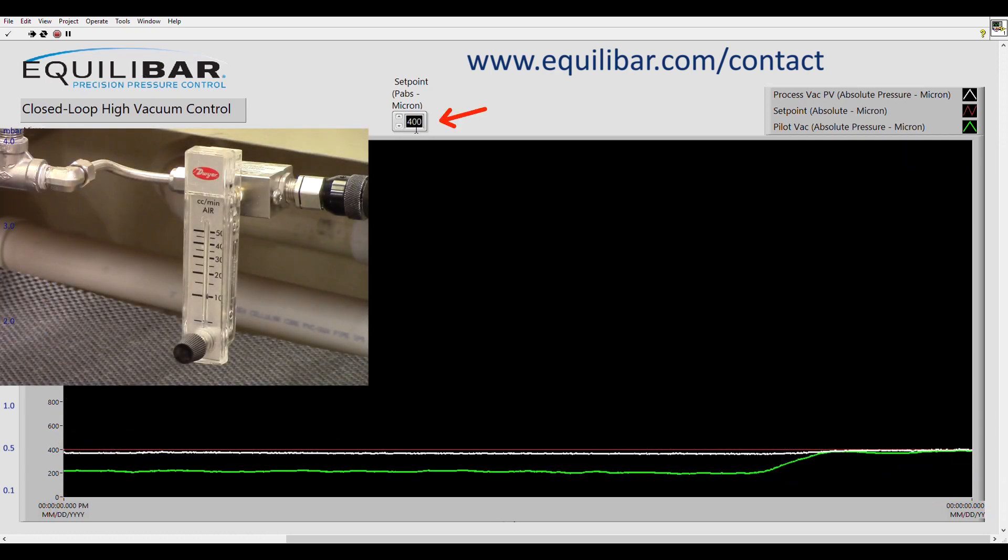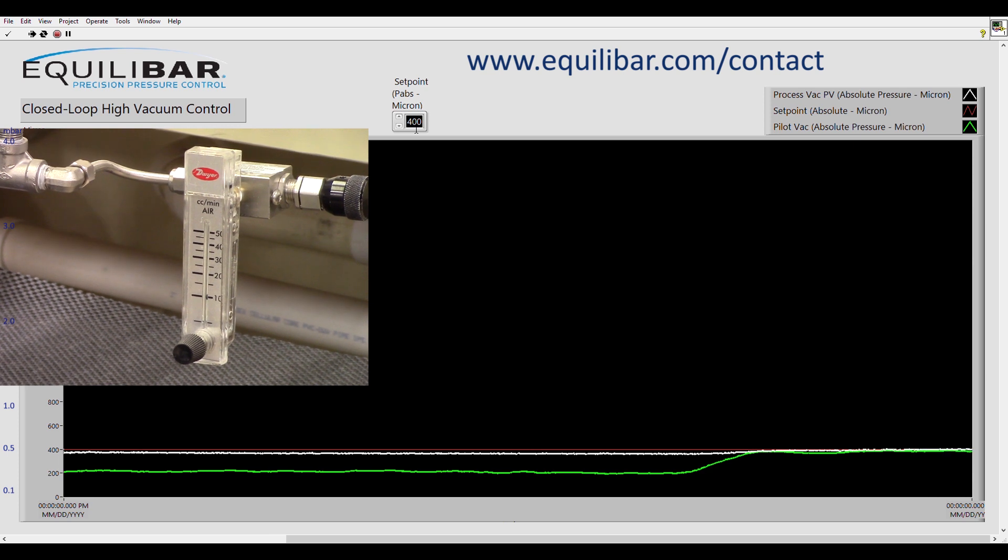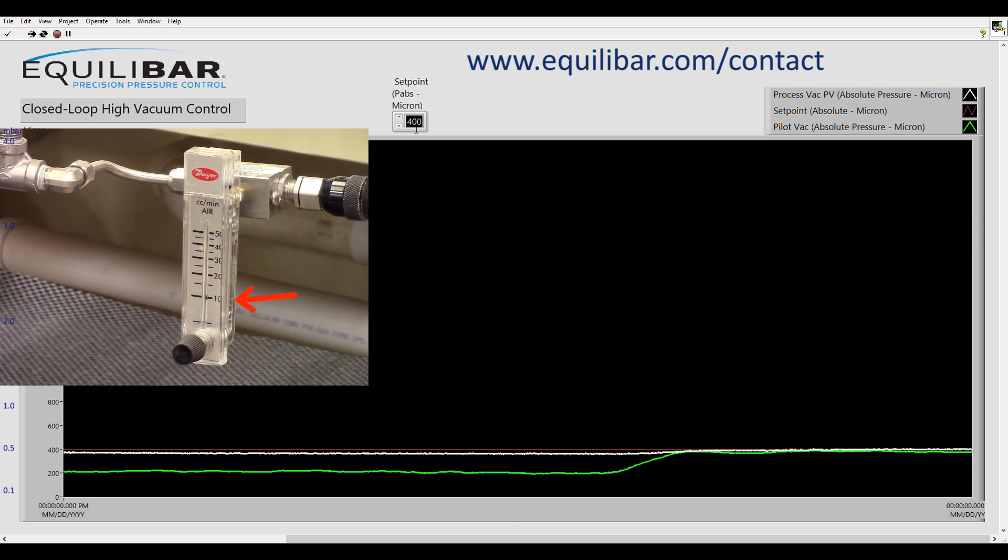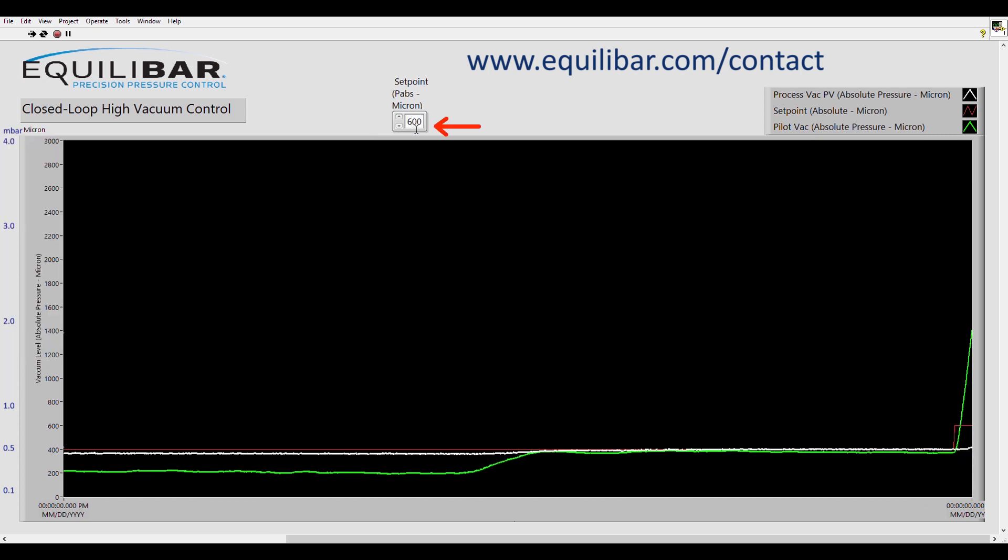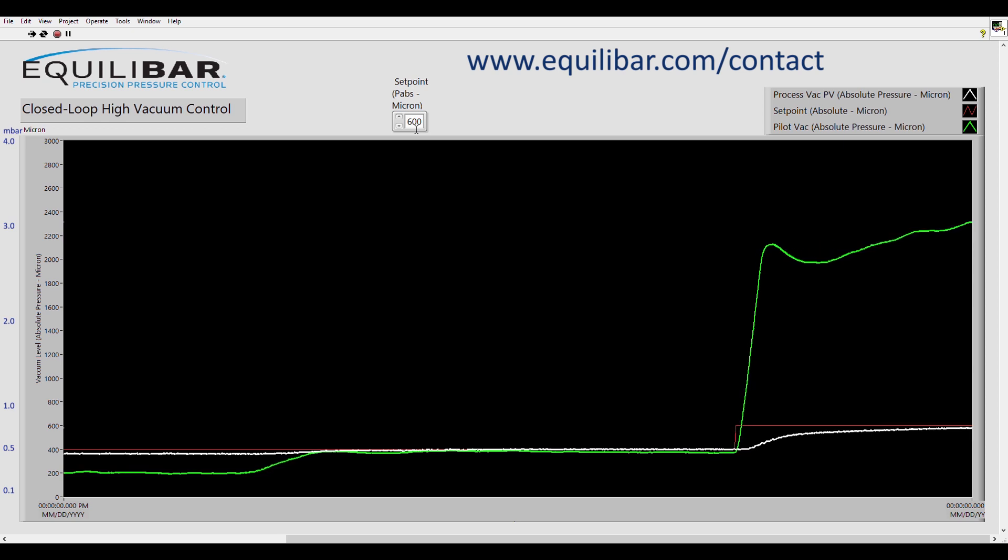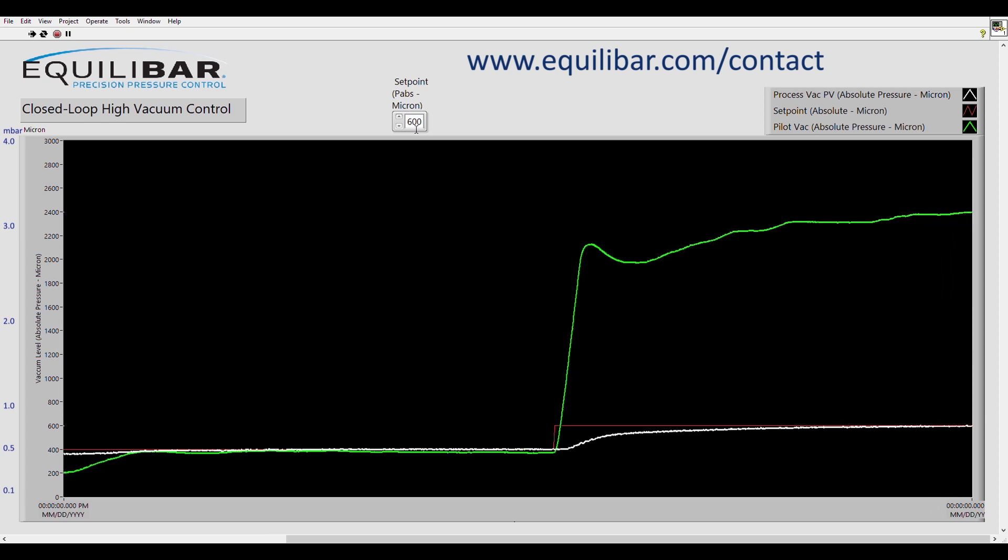Now we're controlling at 400 microns with about 10 standard milliliters a minute of mass flow. Let's see the effect of changing the set point from 400 to 600 micron. Note that the PID controller adjusts the green pilot pressure to bring the white process pressure line back to the set point.